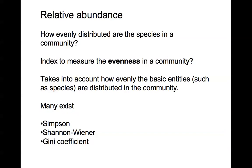Relative abundance reflects how evenly distributed species are in a community, and we can calculate indices to measure evenness. Common ones in ecology are Simpson's index, the Shannon-Wiener index, and the Gini coefficient. The Gini coefficient was originally developed for economics as a way of measuring wealth disparity in a community.